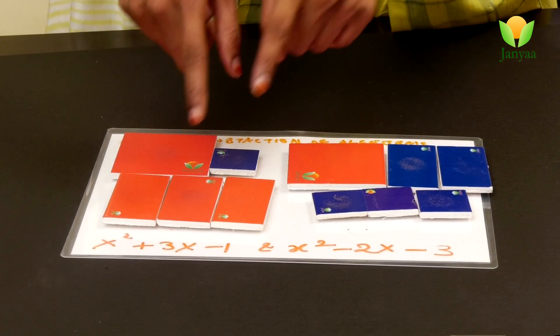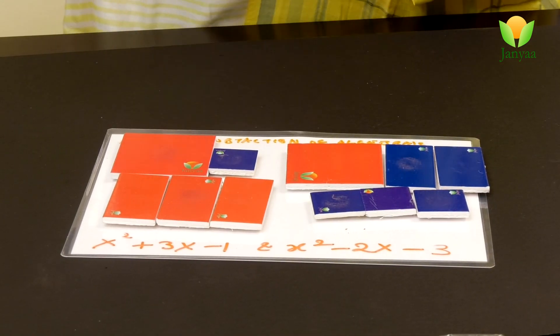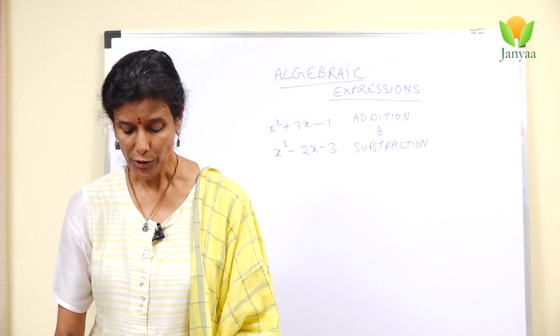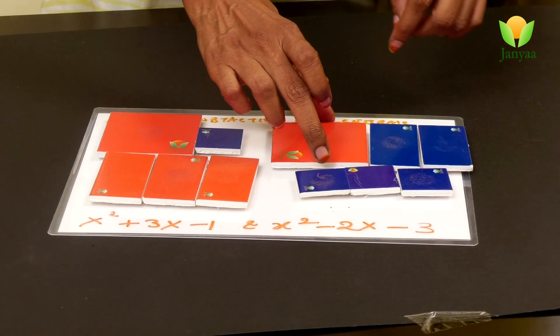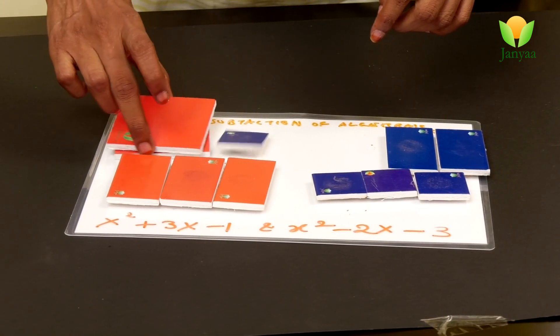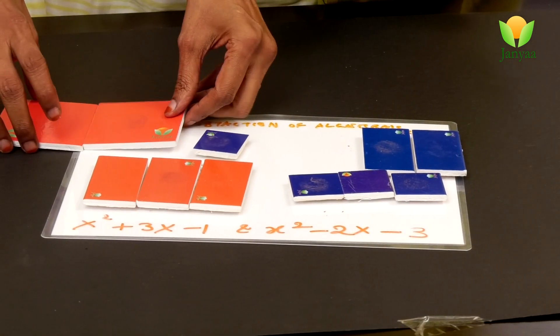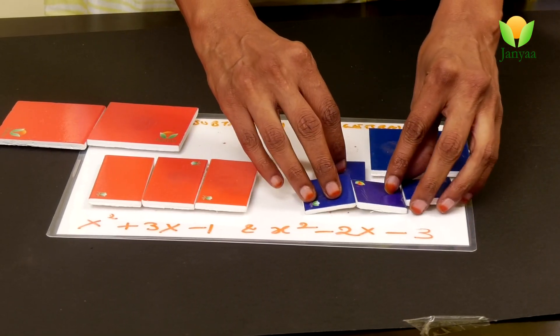We are going to first learn how to add these algebraic expressions. You are adding them. What you can do is you can add, you know, like these two are 2x squared, that we know, right? Now you add these four, right?